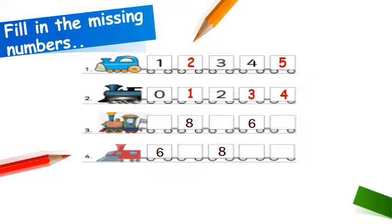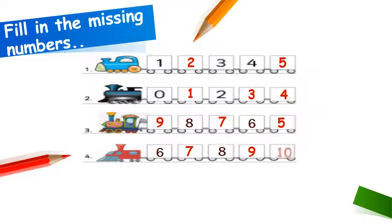Now look at the third train. Eight and six are written. Will we count on or count back? Yes, we will count back this time. Nine — then eight is written already, then seven, and six is written already, then five. Now look at the last train. Six and eight are written. We will count on. After six there is seven, then eight is written already, then nine and ten. This is how we have filled our number train.